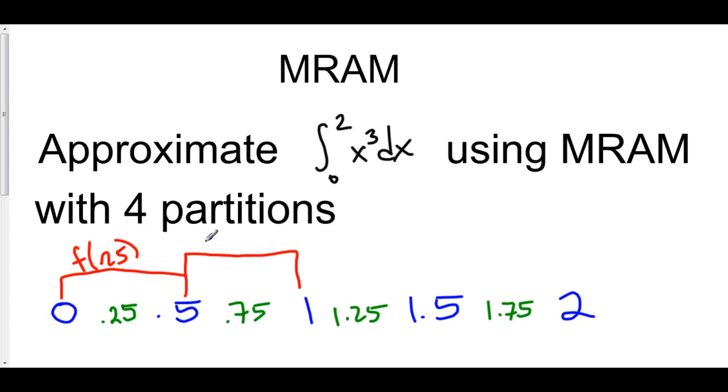The third rectangle, f of 1.25, and our fourth rectangle, f of 1.75.